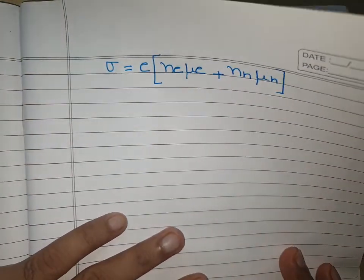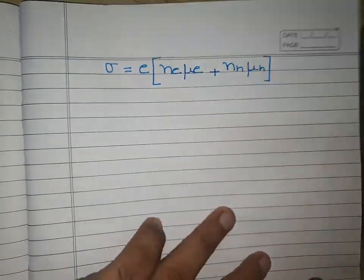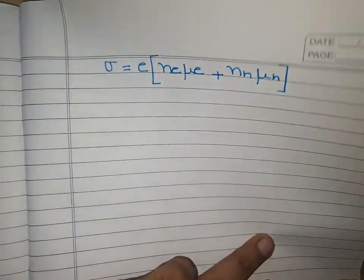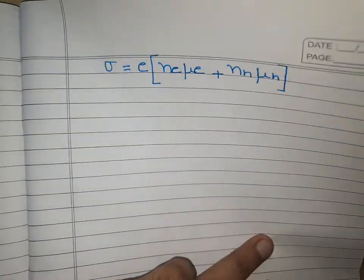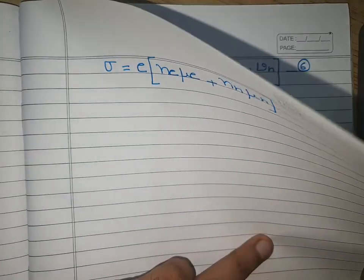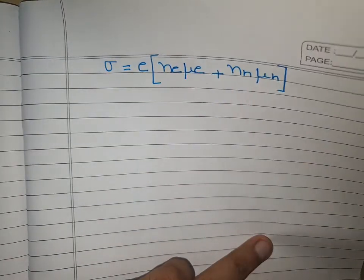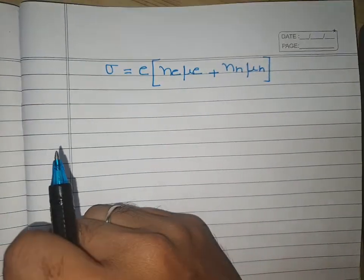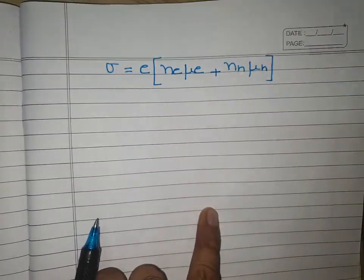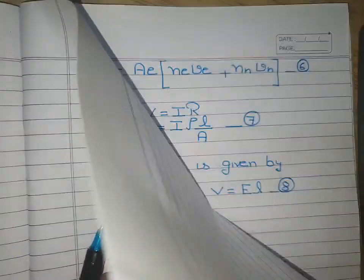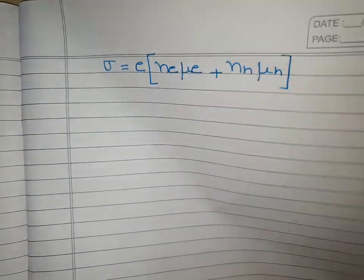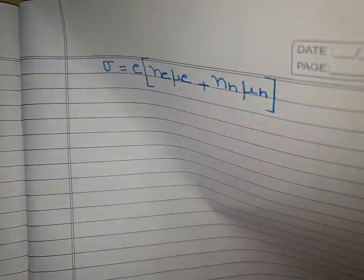This is the required expression for the electrical conductivity of a semiconductor. In the next lecture, we will start the second chapter. Thank you.